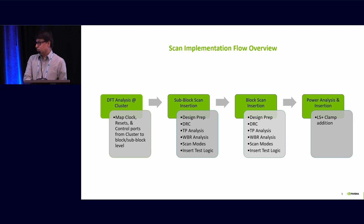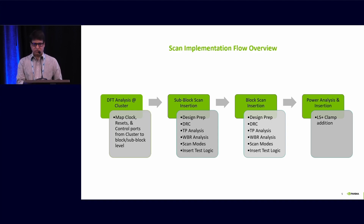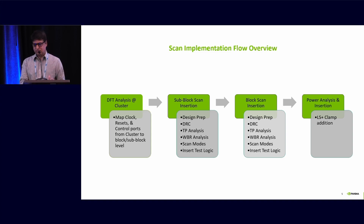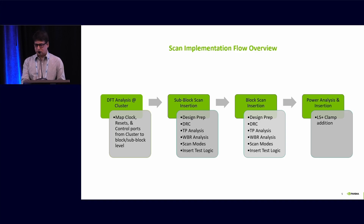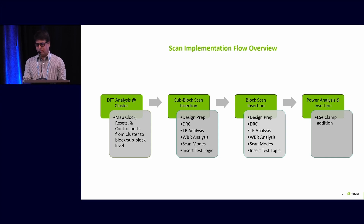This is the scan implementation flow overview. We start with DFT analysis at the cluster level, where we extract all the clock, reset, control port, or boundary port information of the cluster down to the sublock and block. Once we extract this information from the cluster to the sublock or block, we perform the sublock scan insertion. Sublock scan insertion goes through different scan insertion steps: starting with design preparation, which includes loading the design and the DFT constraints, then performing DRC, design rule check, TP analysis, WBR analysis, defining the scan mode.